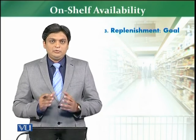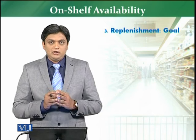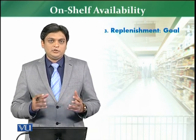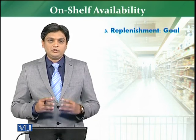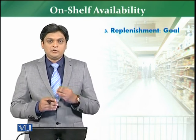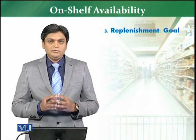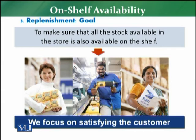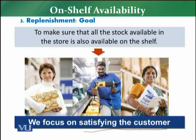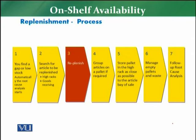The third part we are going to discuss is about replenishment — replenishing the stock after having the gap check analysis. Once you replenish a product, which products to replenish first, which to replenish later, how to replenish, what rules to follow, and which assortment tools to follow. The replenishment goal is to make sure all stock is available in the store and also available on the shelf, with synchronization between the two, to ultimately make the customer satisfied.